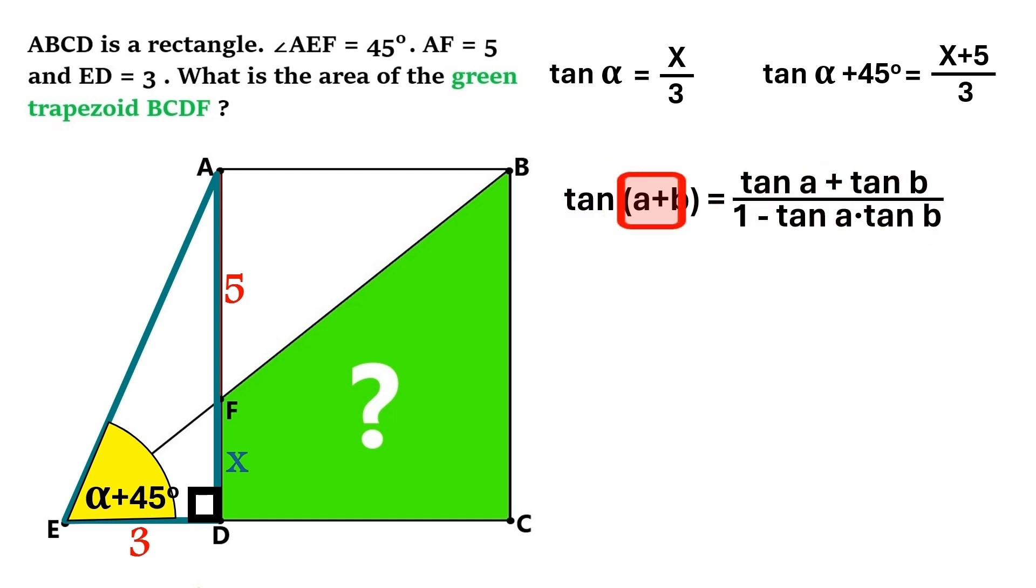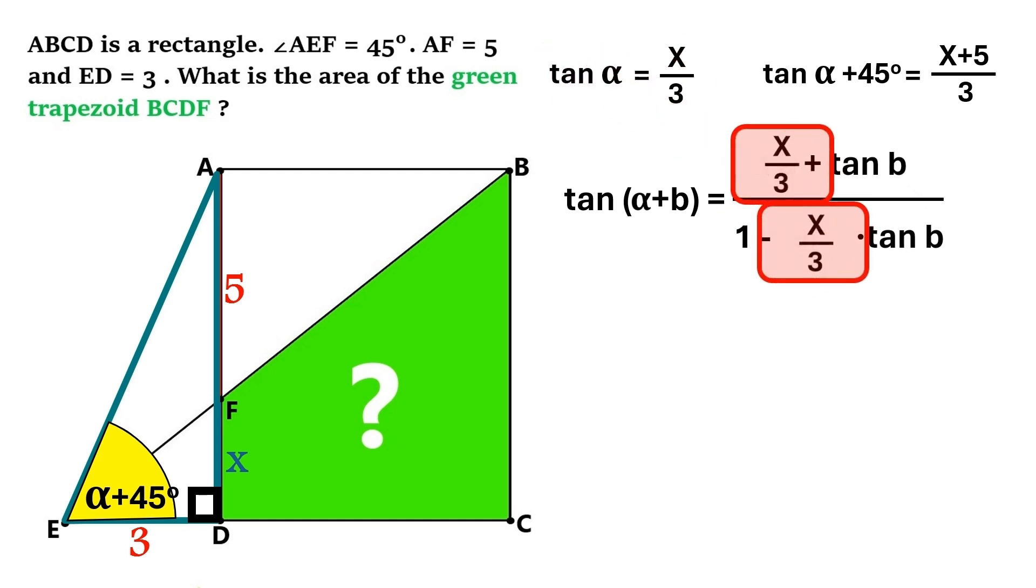In this formula, we are going to change A to alpha, because that's the angle we are working with. And these two tangent A's are to become tangent alphas. But we already know that tangent alpha is x over 3. So we are going to plug that value into our formula.